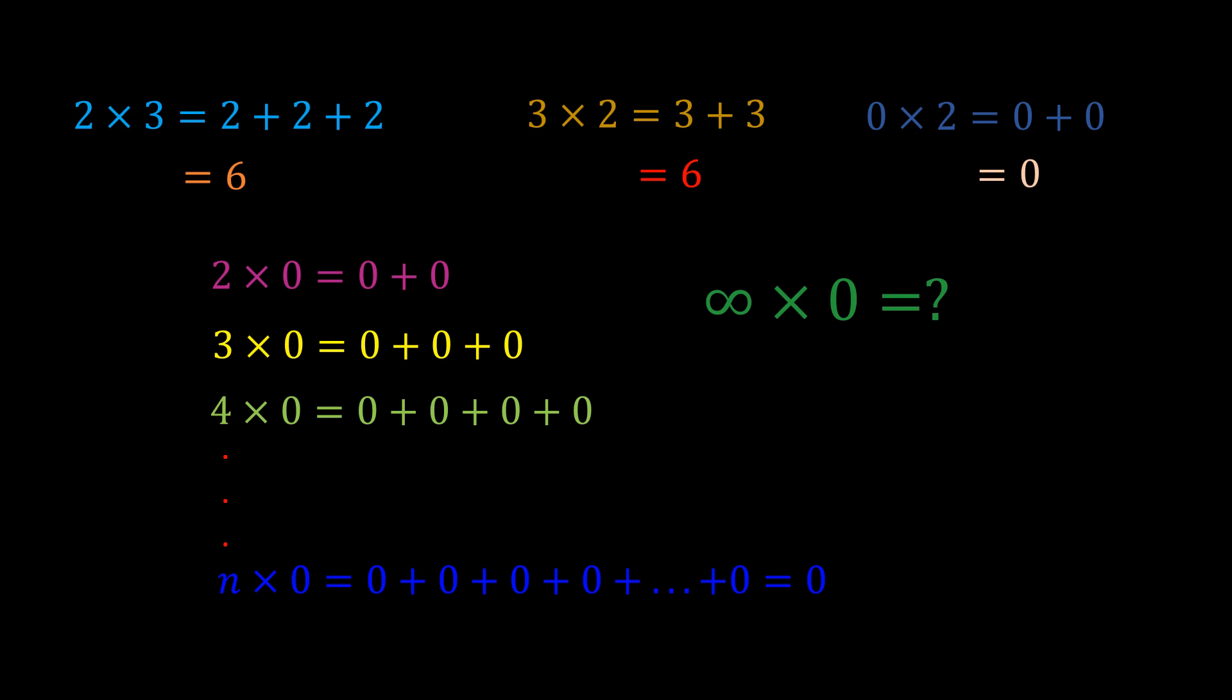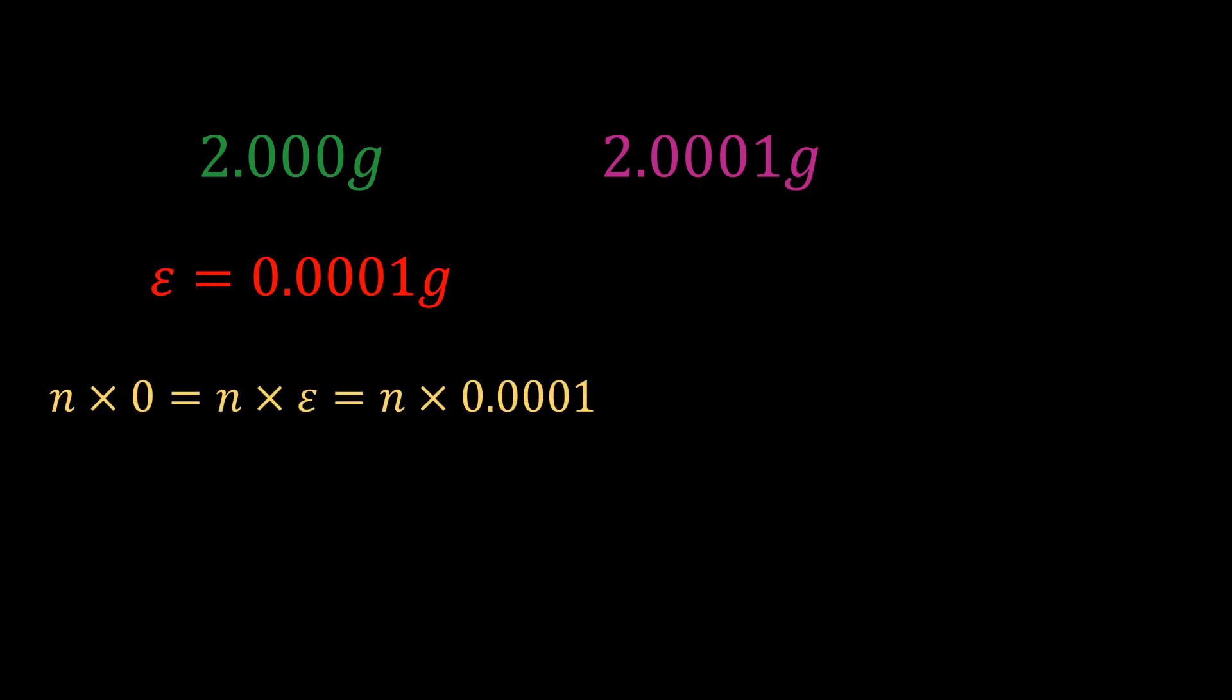Let us go into the cookie factory. Each cookie weighs 2.000 grams. Because the scale is only sensitive enough to read 4 decimal places, all the cookies will have a mass slightly less than or greater than that, such as 2.0001 grams. So, the zero of this situation is 0.0001 gram. So in this case, n times 0 is equal to n times 0.0001. If the factory produces 20,000 cookies, then we will have an extra mass of 20,000 times 0.0001, which is equal to 2 grams.